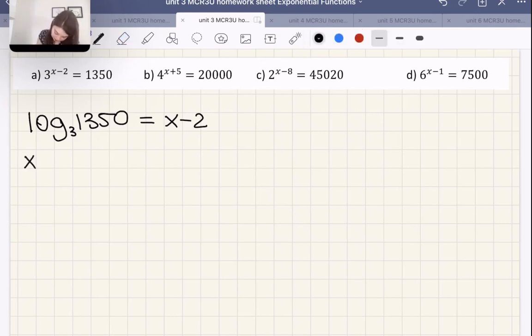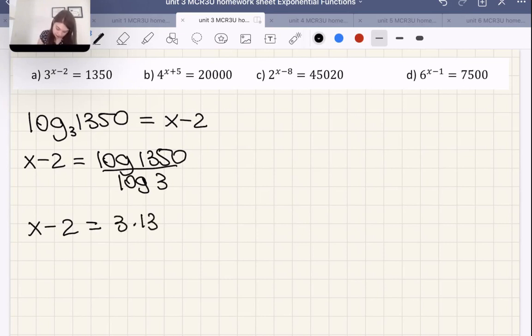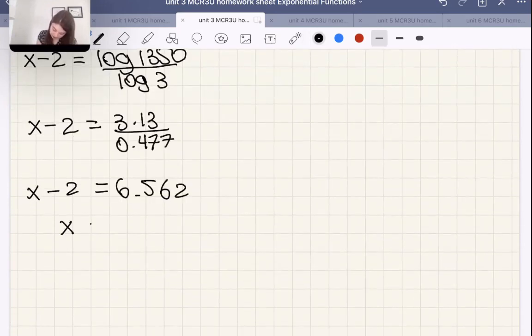So then we have x minus 2 must equal to log 1,350 over log 3. So x minus 2 must equal to 1,350, logarithm with the base 10, 3.13, and logarithm of 3, 0.477. So 3.13 divided by 0.477 is 6.562, there we go. And then we're going to add 2 to both sides and get that x equals 8.562. And there's our answer.